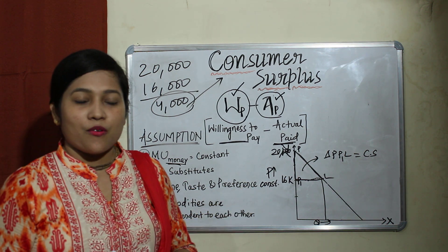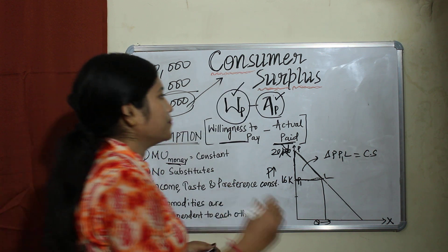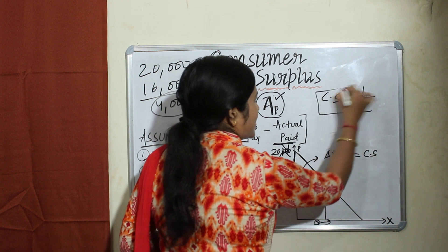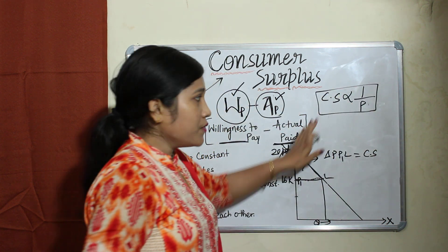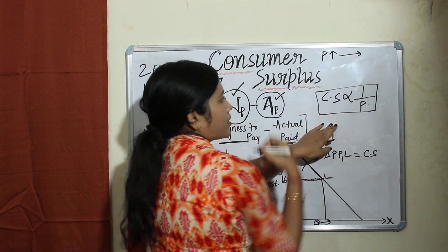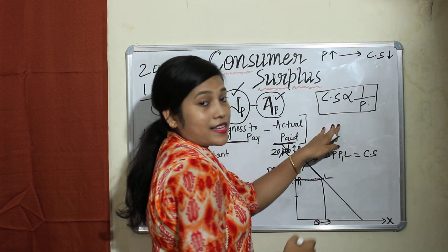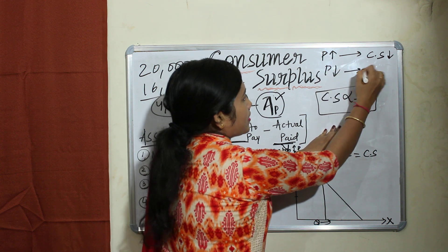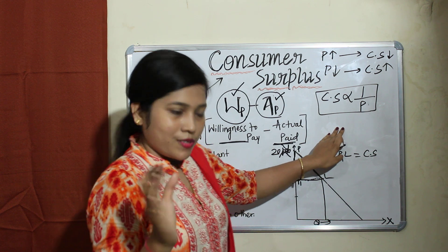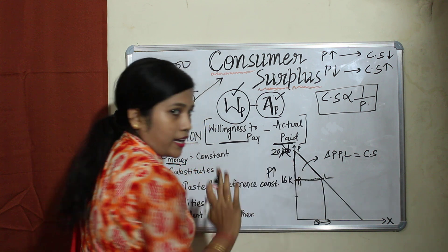Next, what is the relationship between the change in price and consumer surplus? Consumer surplus is inversely proportional to price. If price increases, consumer surplus will decline. Similarly, if price decreases, consumer surplus will increase. Here your consumer surplus is triangle P, P1, L.